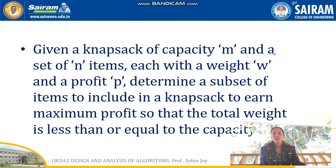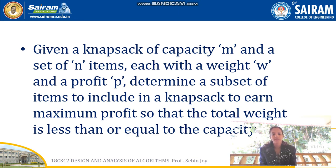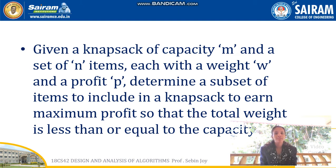The Zero-One Knapsack problem is: given a capacity M for a knapsack and a set of N items, each with a weight W and a profit P, determine a subset of items to include in the knapsack to earn maximum profit, so that the total weight is less than or equal to the knapsack capacity. Since it is a maximization problem, using Branch and Bound we have to find the upper bound at each stage.